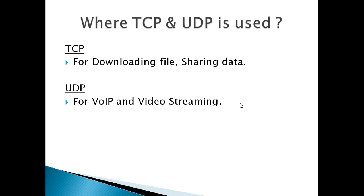TCP and UDP are used in different scenarios. You can use TCP to download a file and for reliable data transfer. UDP is used for video streaming and Voice over IP, where real-time delivery matters more than reliability.